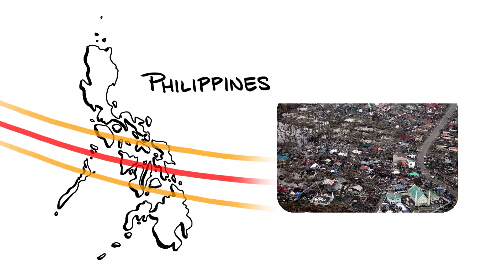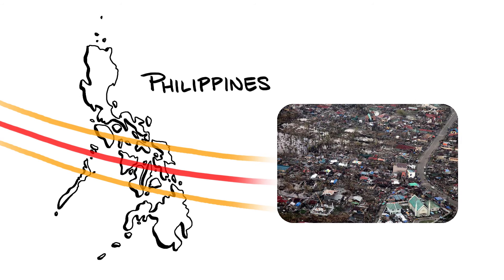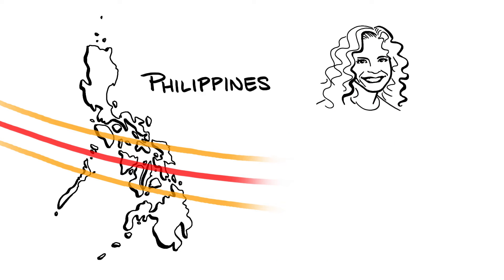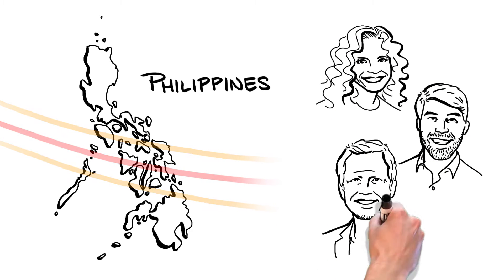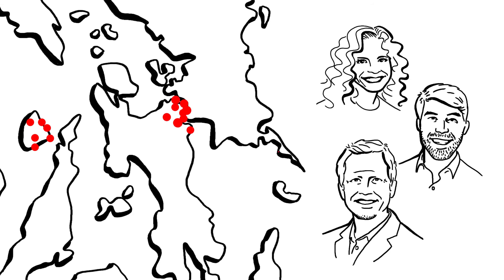Our research team, led by Amy Javernick-Will, Aaron Opdyke, and Matthew Kochman from the University of Colorado Boulder, studied 19 rebuilding sites in three different regions hardest hit by the storm. We interviewed hundreds of community members, agency workers, and government officials over a period of three years. We were amazed at the problems we saw.